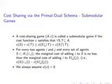The above condition is equivalent to the condition of decreasing marginal cost, which says that for every two agents i and j, and every set of agents S which is a subset of A minus {i, j}, the marginal cost of adding i to S — that is C(S ∪ {i}) minus C(S) — is no less than the marginal cost of adding i to S ∪ {j}, that is C(S ∪ {i, j}) minus C(S ∪ {j}). We always assume that C(∅) = 0.